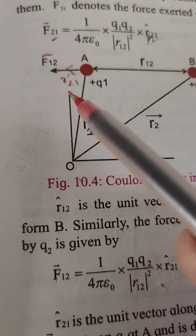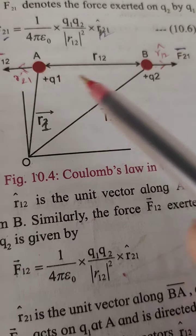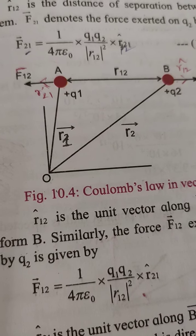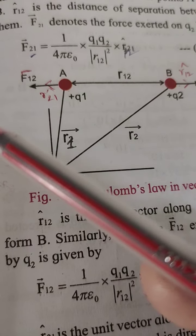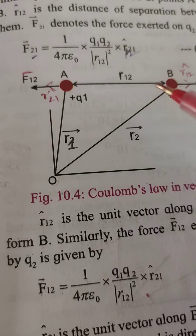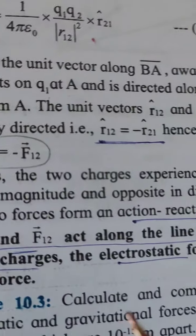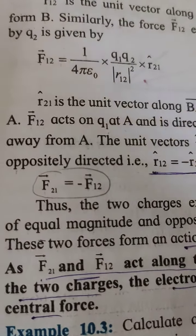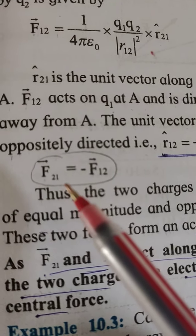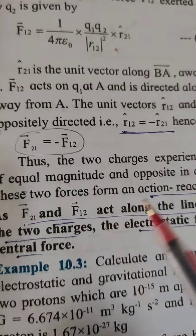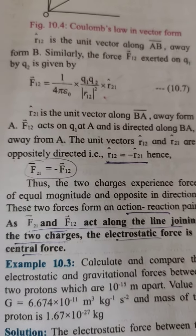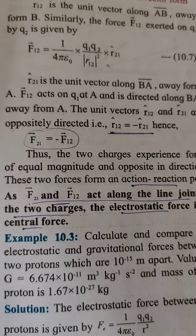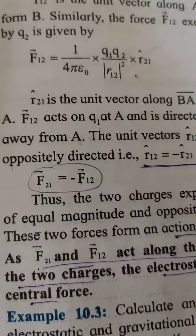It is important to note that unit vector R̂21 and unit vector R̂12 are opposite to one another — one directed toward the right-hand side and the other toward the left-hand side. Therefore R̂12 = −R̂21, and R̂21 = −R̂12. Thus the two charges experience forces of equal magnitude and opposite direction, forming an action-reaction pair. This is Coulomb's law in vector form.